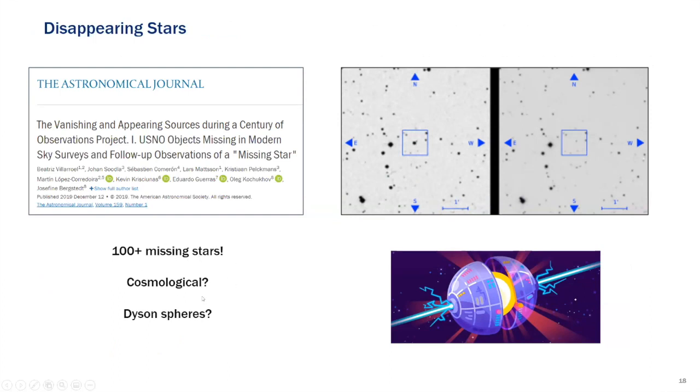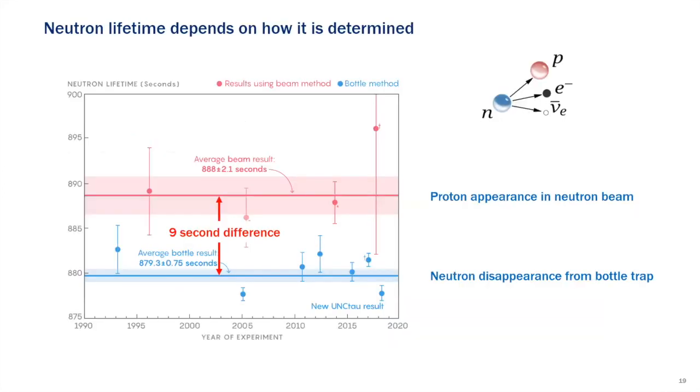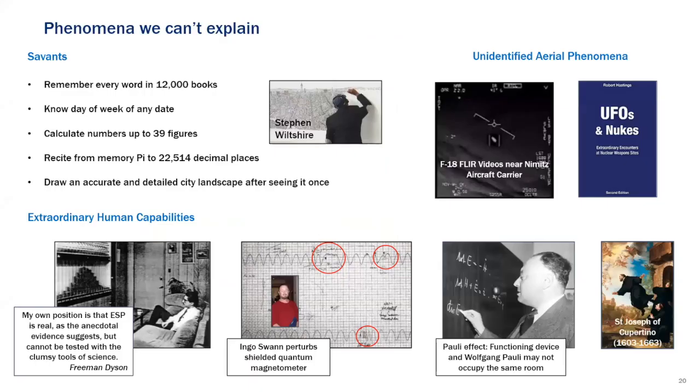Is that cosmological or maybe they're Dyson spheres. Maybe some race created, you know, what Freeman Dyson came up with, where you put a thing around the best way to harvest the energy you got is to put something all the way around your sun. And, you know, and then even simple things, simple things like what's the neutron lifetime. Well, that depends upon how we measure it, right? If we are measuring when the proton appears in a neutron beam after, you know, for the decay versus when it disappears from a trap, there's about a nine second difference. That's actually gone up since this chart. It's now a 10 second difference.